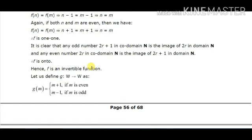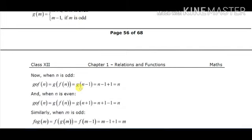The inverse g is defined as: g(m) = m + 1 if m is even, and g(m) = m - 1 if m is odd. We now verify the compositions. For g∘f when n is odd: f(n) = n - 1 (which is even), so g(n - 1) = (n - 1) + 1 = n. For g∘f when n is even: f(n) = n + 1 (which is odd), so g(n + 1) = (n + 1) - 1 = n.